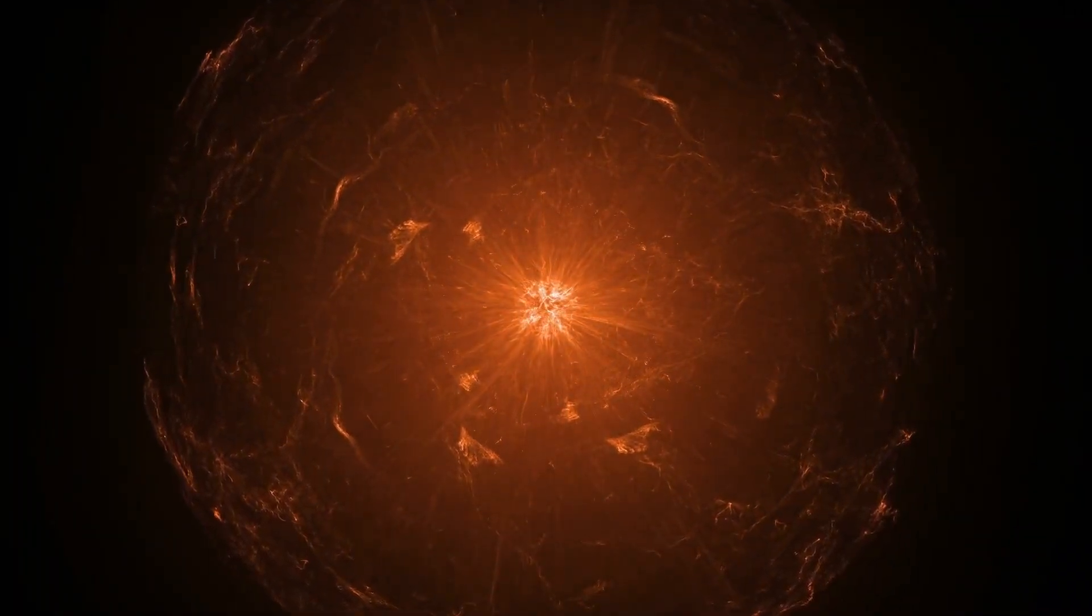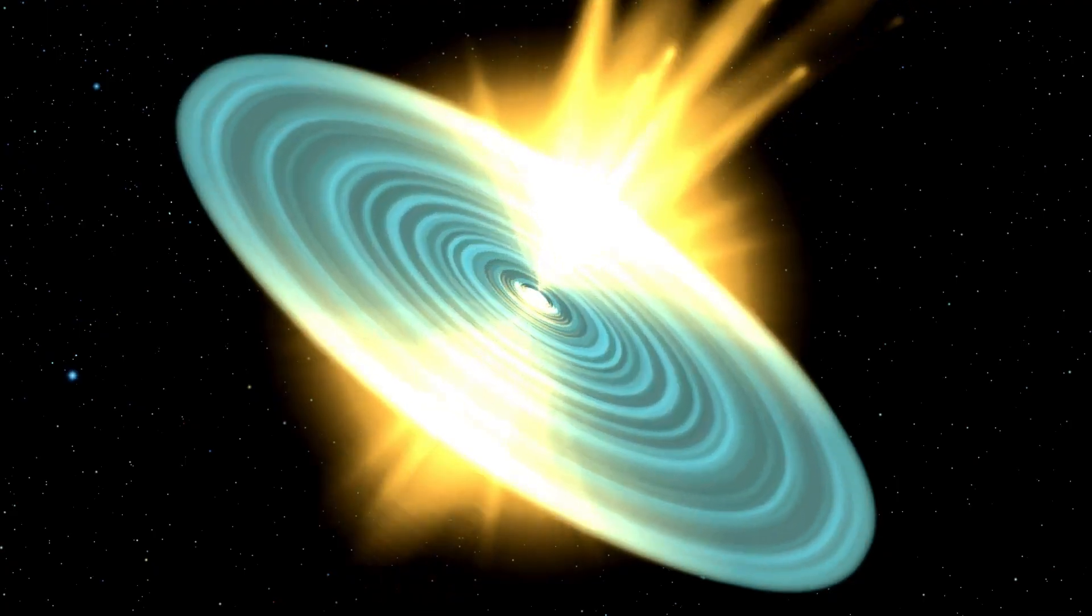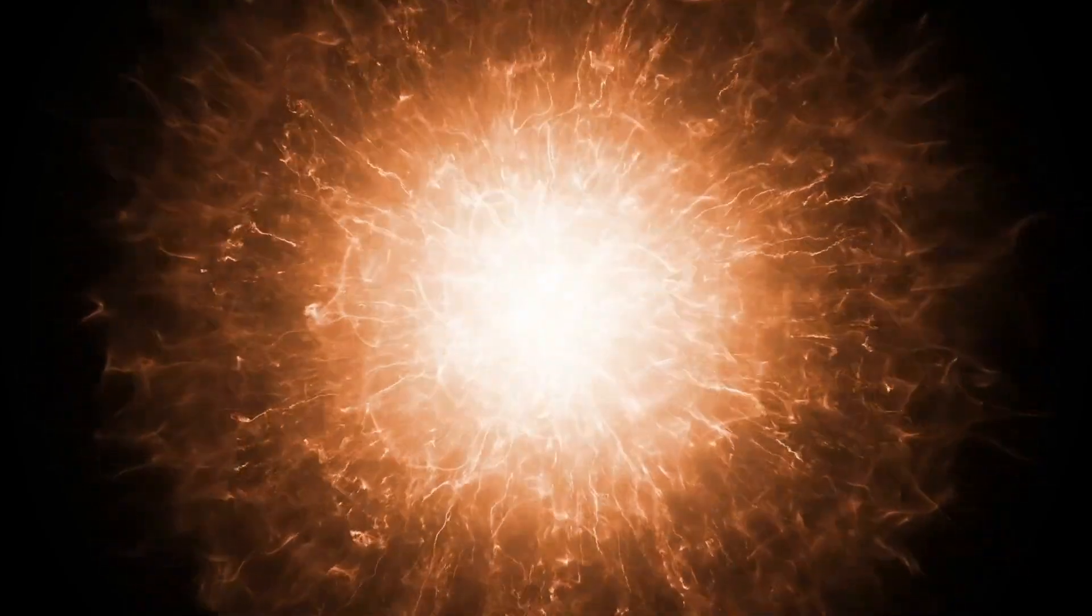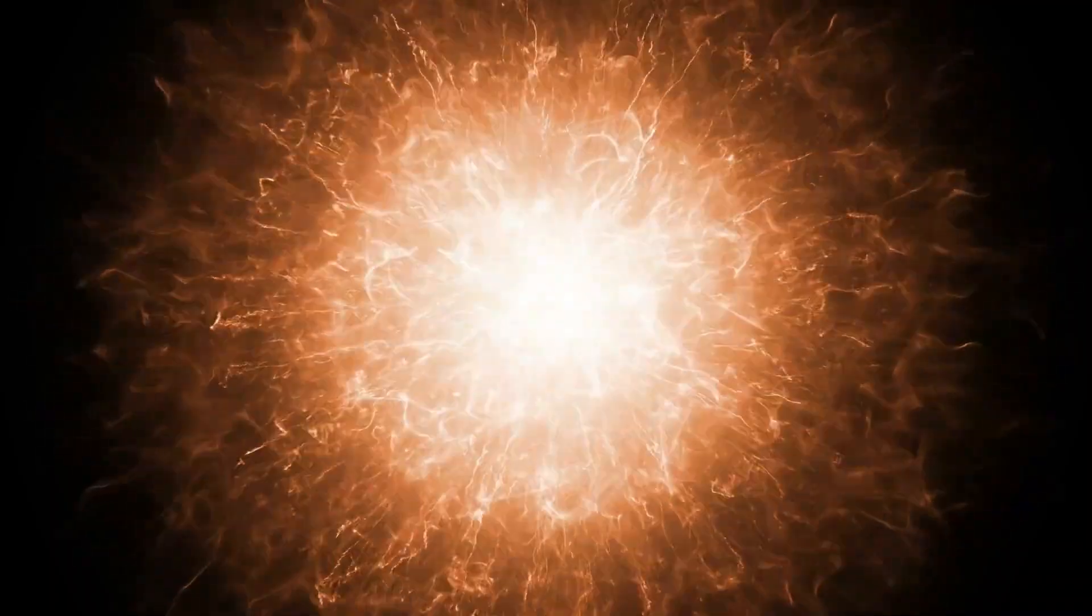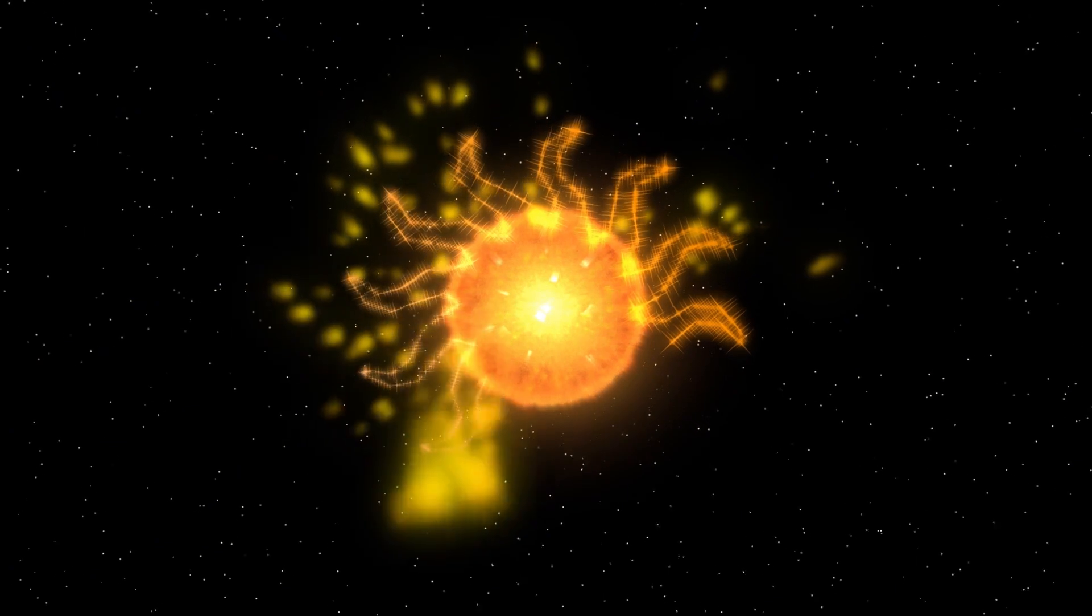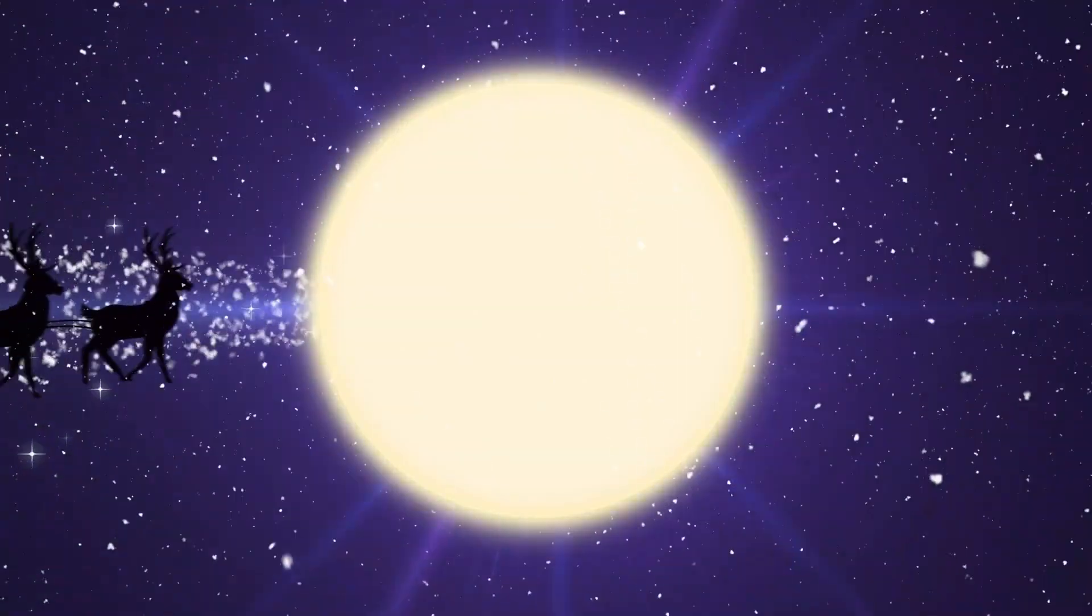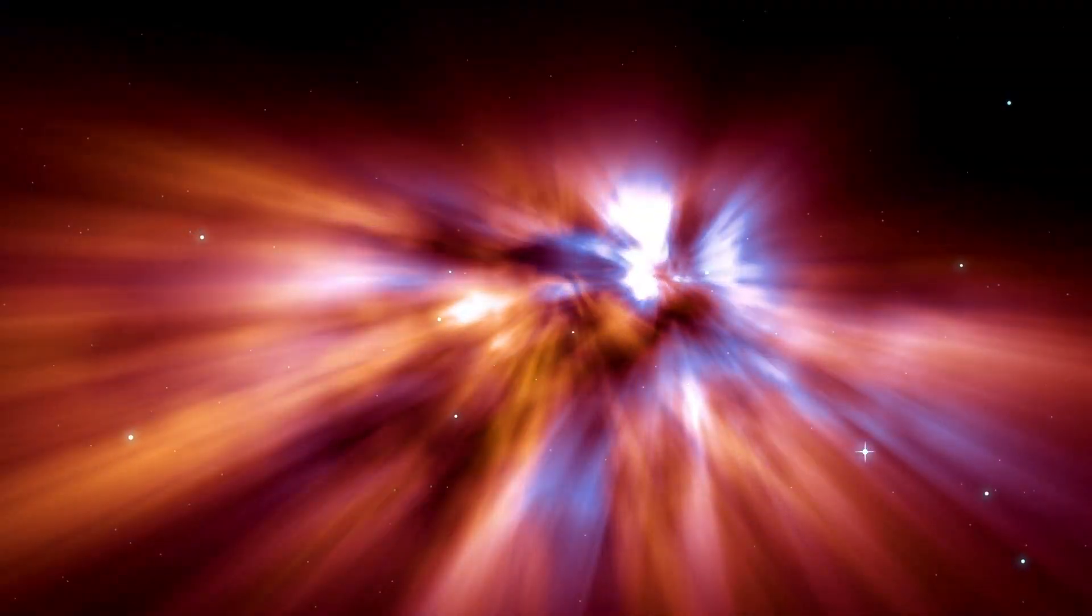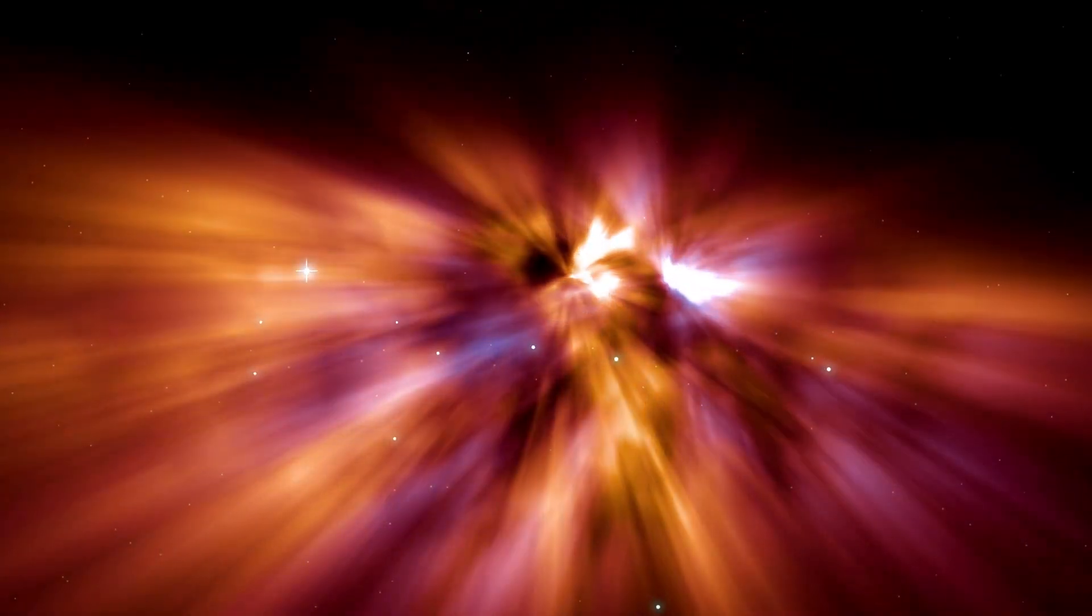Betelgeuse goes through two brightening and dimming cycles, one of which occurs every five years and lasts about 100 days. It is believed that the expansion and contraction of its outer shell during these cycles causes changes in its diameter and average temperature. Many paid attention to Betelgeuse because of its erratic behavior in 2019 and 2020 when its brightness decreased dramatically, only to recover temporarily. Some astronomers have speculated that this behavior could indicate the star is in the final stages of its life.